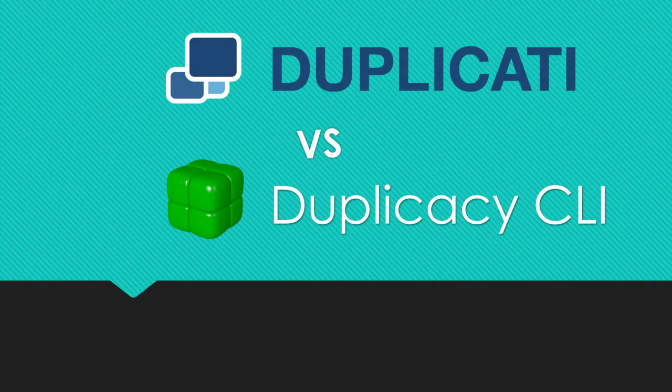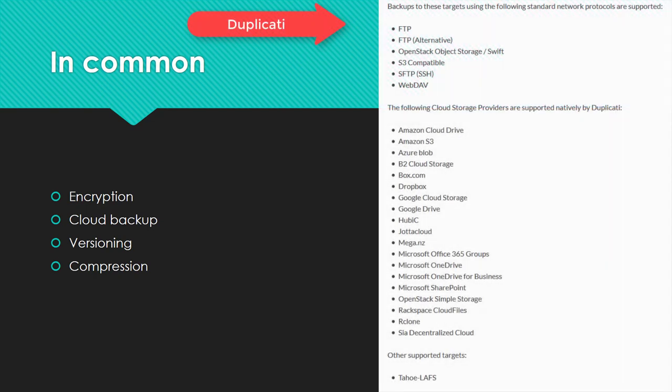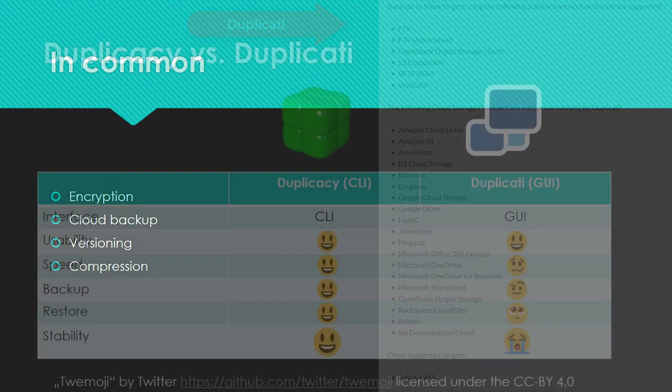In this video, I compare the backup software Duplicatee with the backup software Duplicatee. Both programs have basic backup features like encryption, versioning, and compression in common. Backups to several backends like Google Drive and Dropbox are supported. Standards like WebDAV and SFTP can also be used. Please check the links in the video description to see which backends are supported by which software.